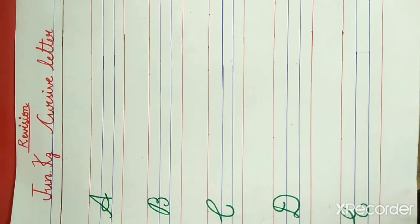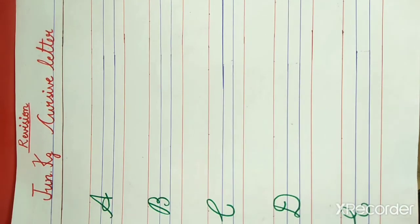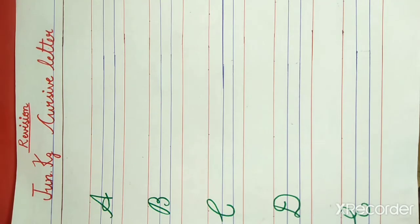Aaj hum kya seekhenge? Aaj hum revision karenge. A for apple, B for ball, C for cat, D for duck, E for elephant, egg.